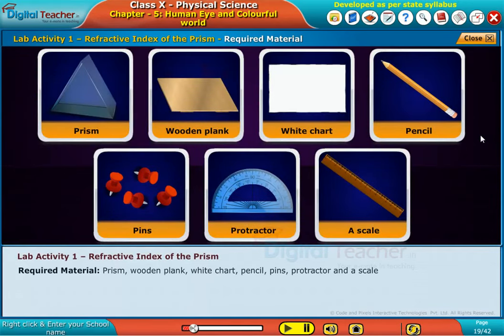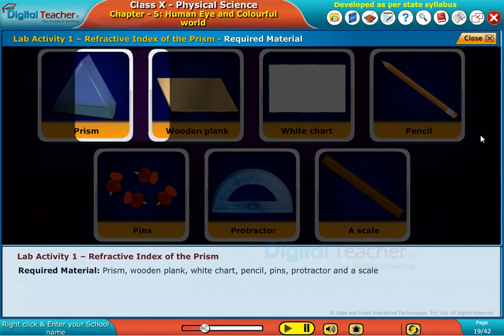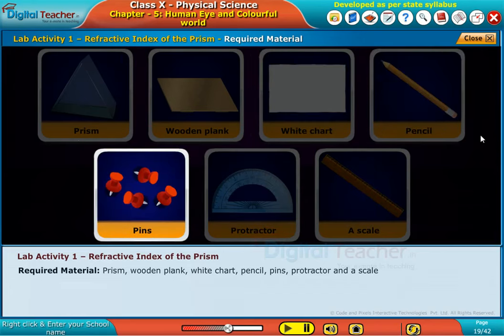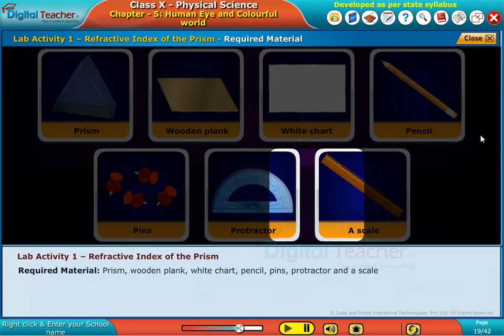Materials required are prism, wooden plank, white chart, pencils, pins, protractor and a scale.